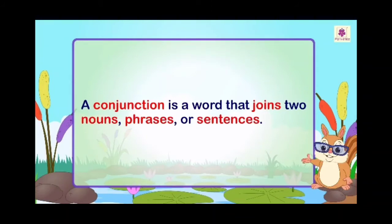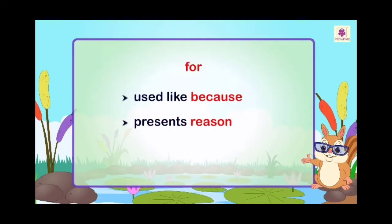Two nouns means any two words, like 'Rahul and Ritu.' We can join two sentences using conjunctions like 'but,' 'because,' 'if,' 'and,' 'or,' etc. So these are coordinating conjunctions. Now let's see some uses of conjunctions. 'For' is used like 'because' — it presents a reason and shows us why something happened.